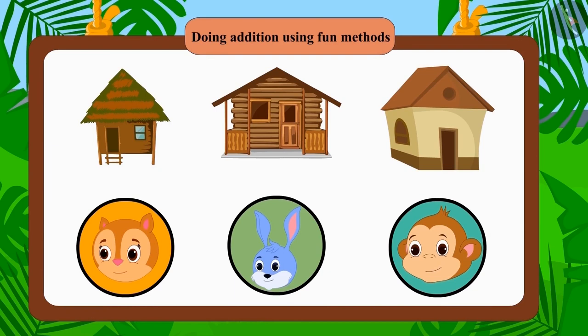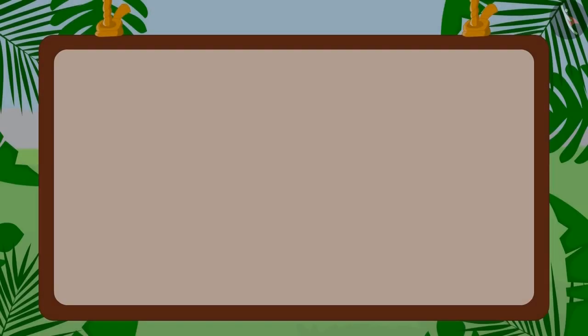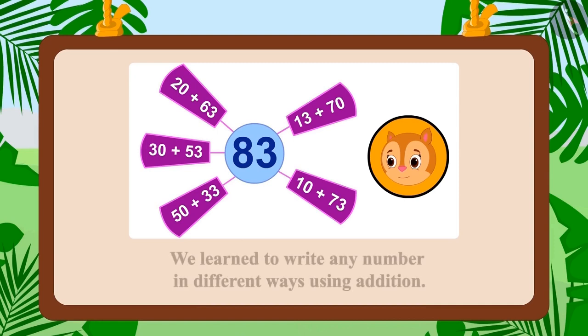Finally, Chanda, Bunny and Babban have built their houses. Children, in this lesson, we learned to write any number in different ways using addition. We will learn more about this in the next lesson.